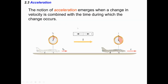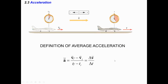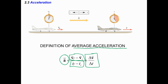Next up and last but not least for this section on kinematics — we've got displacement, distance, velocity, speed, and finally acceleration. Acceleration is a change in velocity with time. The average acceleration — using a — is a change in velocity over my change in time. So it's the ratio of delta V over delta T.